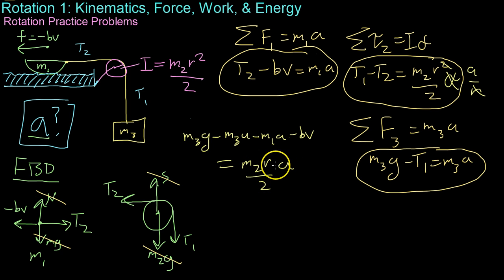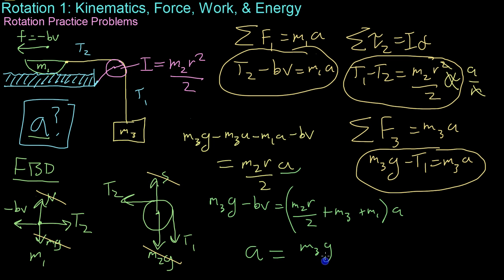From here, it's just a matter of algebra, moving all the like terms onto one side and then factoring out the a, the acceleration value, and solving for it. So, we know that M3 G minus BV equals M2 R over 2 plus M3 plus M1 all times a. Or, you get your final answer that the acceleration of the system is M3 G minus B times V over M2 R over 2 plus M3 plus M1.